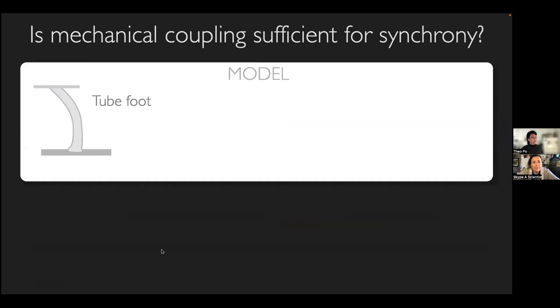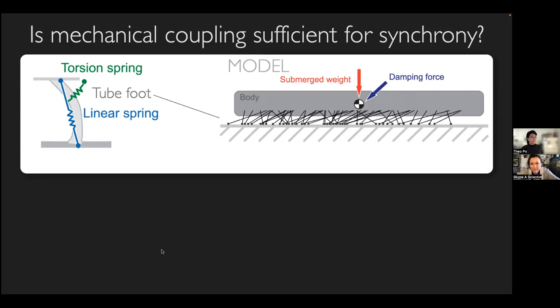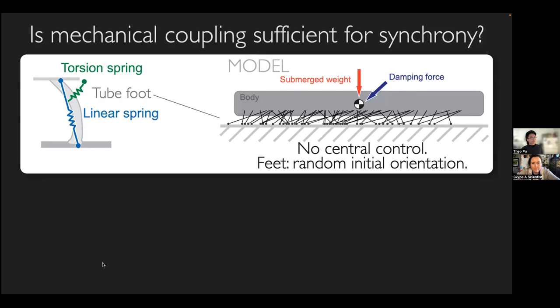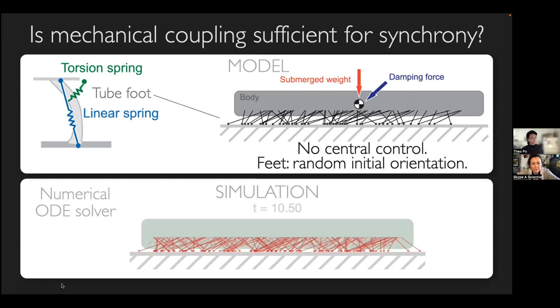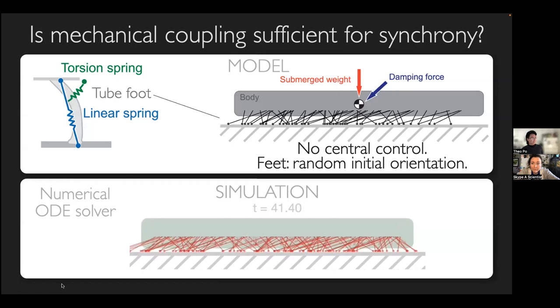We also had a robot. In our model, the tube feet are represented by simple springs — a linear spring like you see in a ballpoint pen, and a torsion spring that provides rotational force like a mechanical mouse. We have 250 of these feet with no central control, all starting at random initial orientations. Similar to the metronomes, they're able to synchronize. In the simulation, the feet step onto the ground and step off at similar times in each step.